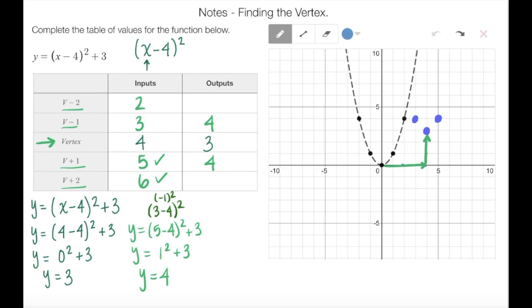Final step, we're going to substitute in 6. So y equals 6 minus 4 squared plus 3. 6 minus 4 is 2 squared plus 3. 2 squared is 4 plus 3 is an output of 7. So I know now in my table that when x is 6 my output will be 7. So I assume that that will also be the same for 2.